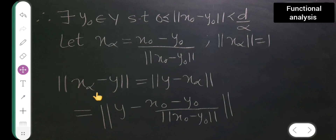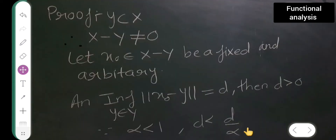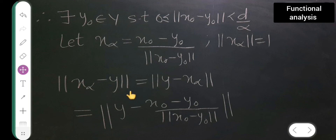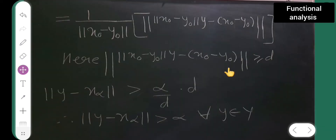Now consider the norm of x_α minus y. I will interchange this to norm of y minus x_α, which equals the norm of y minus (x₀ minus y₀) upon the norm of x₀ minus y₀. I will take the factor 1 upon the norm of x₀ minus y₀ outside, giving the norm of (norm of x₀ minus y₀) times y minus x₀ minus y₀, all divided by that norm.